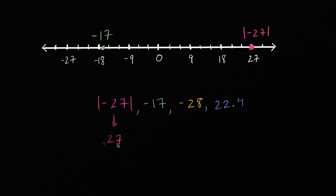And then we have negative 28. We have negative 27 and each hash mark is 3, so negative 28 is going to be right over there. Negative 28.